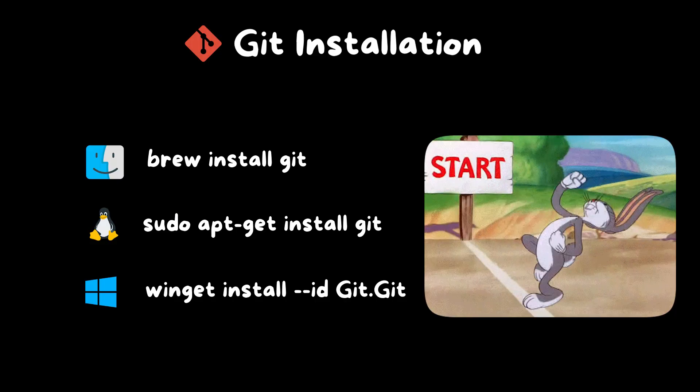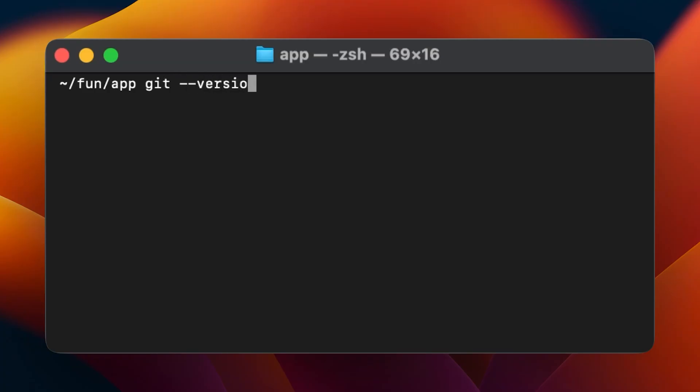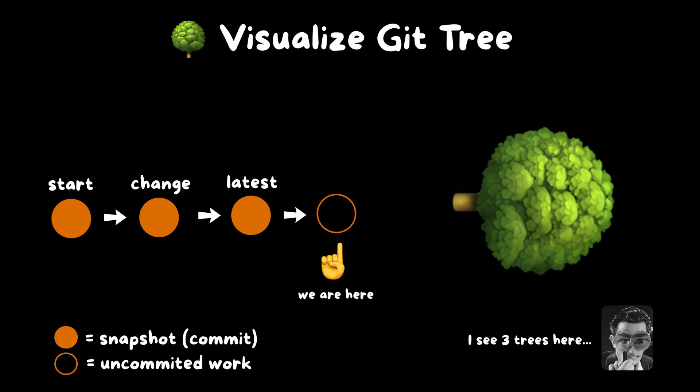To get started, you'll want to install Git. You can verify the installation was successful by opening a terminal or command prompt and typing git --version. When people talk about Git, they say it's like a tree with branches. But since we're just starting, let's simplify it to one continuous branch. You can think of every point on that branch like a checkpoint or a snapshot that you can go back to at any time.